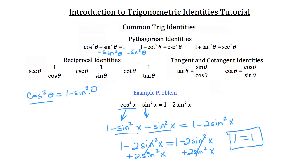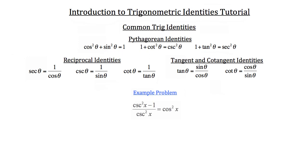Let's take a look at one last identity: the cosecant squared of x minus 1, all over cosecant squared of x, is equal to cosine squared of x. Let's start with the numerator — cosecant squared of x. The cosecant of x is equal to 1 over sine of theta, so cosecant squared of x is really just 1 over sine squared of x. We still have that whole thing minus 1 all over the cosecant squared of x, so again I'm going to write that cosecant squared of x as 1 over sine squared x.